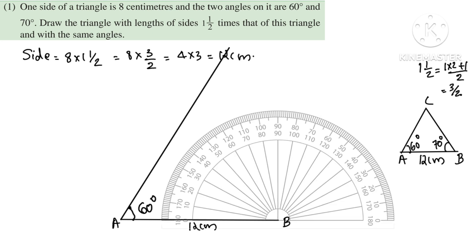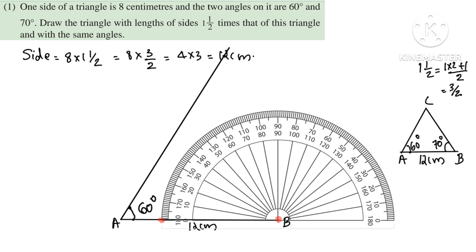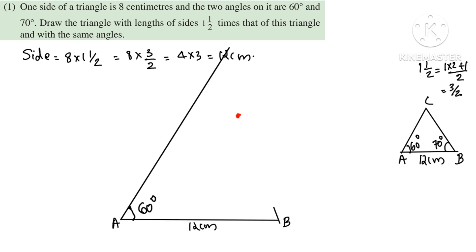Now we place the protractor at point B. We mark the 70 degree angle there. This completes the triangle A, B, C.